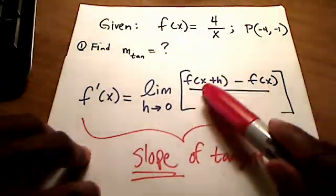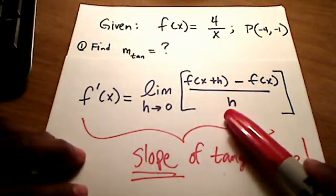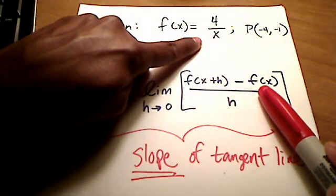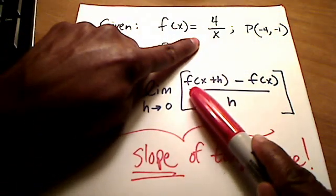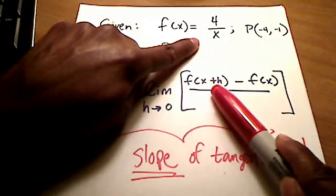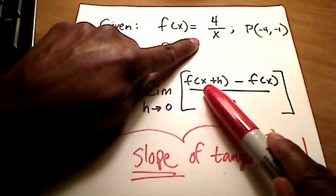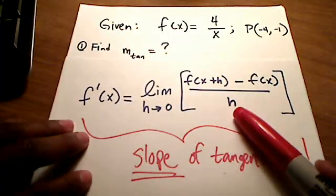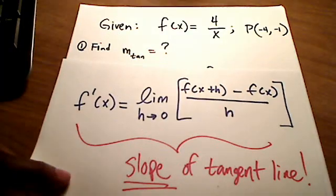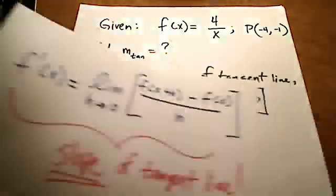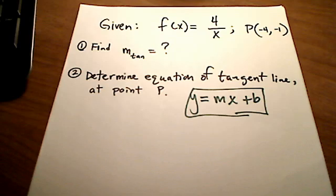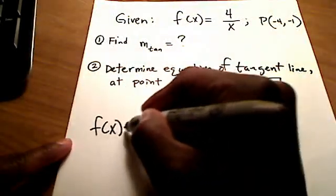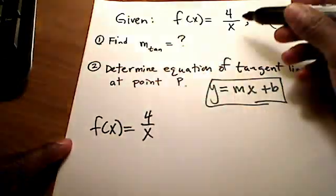So I've got this thing here memorized. I already know what the function f of x is. They gave me that right up here, 4 over x. What I don't know is what f of x plus h is. So let me go find that first, because I need to plug that into this formula. I know what f of x is. That's 4 over x, right? We were given that.